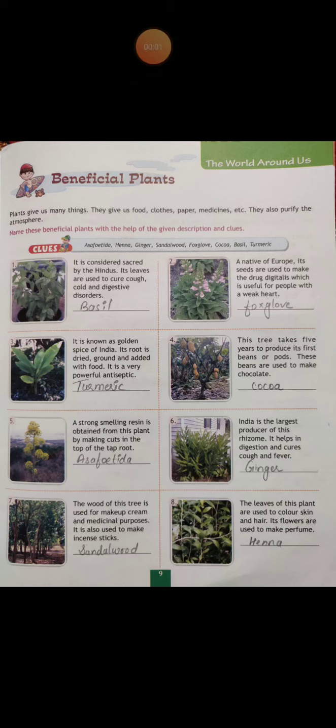Hello, my dear children. Today is the second class of General Knowledge, Class 6. We'll start with page number 9: beneficial plants. Plants give us many things — they give us food, clothes, paper, medicines, etc. They also purify the atmosphere by providing oxygen — everybody knows that. So name the beneficial plants with the help of the given descriptions and clues.